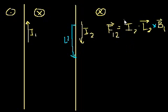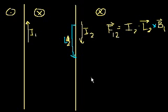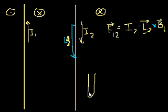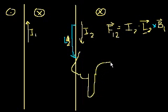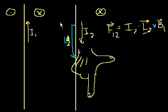That always seems pretty complicated, but you can just use the right-hand rule to figure out the direction. Put your index finger in the direction of L2, and your middle finger in the direction of the field — which is going into the page on this side of wire 1. Your other fingers do what they will, and your thumb will point in the direction of the net force — outward. So the net force is actually going to be outward on wire 2.